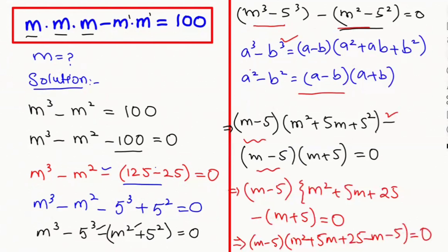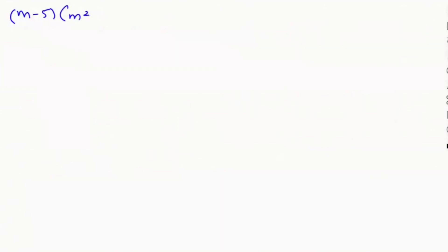Now I'm going to add up the like terms. We get (m minus 5) times [m squared — here we have positive 5m and negative m, so we get positive 4m — and 25 minus 5 gives us 20] equals zero. So we get (m minus 5)(m squared plus 4m plus 20) equals zero. Here we get two cases: m minus 5 equals zero, giving us the first value m equals 5.